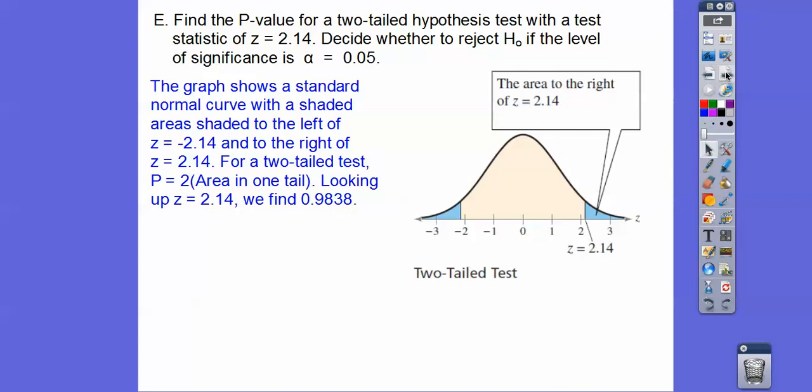So the whole area to the left of 2.14 is 0.9838. So if we do 1 minus that, that'll get me this little dude right here. So the area of this is 0.0162.